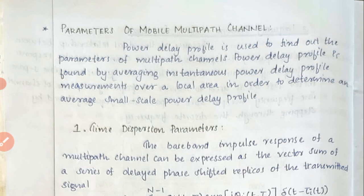In the parameters of mobile multipath channel, we are going to see various parameters: time dispersion parameter, coherence bandwidth, Doppler spread, and others. For all these parameters, the important thing we need to know first is the power delay profile. It is found by averaging the instantaneous power delay profile measurements over a local area to determine an average small-scale power delay profile.